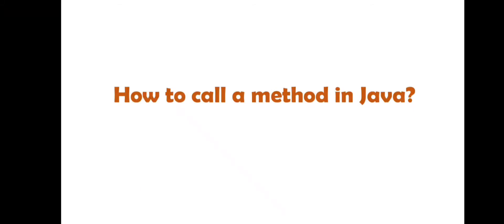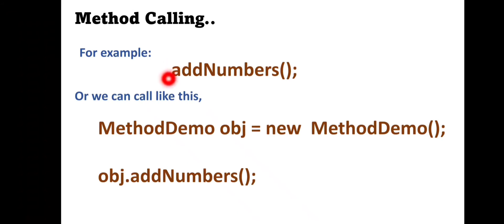Now let's move on to how to call a method. We need to call a method to get the expected result from it. To get the result, we first need to execute the method, and to execute the method we need to call it. During execution, when the program invokes a method, the program control gets transferred to the method, the method executes, and we get the result. To call a method, we write the method name followed by two parentheses and a semicolon. Or we can create an object and then use that object to call the method.